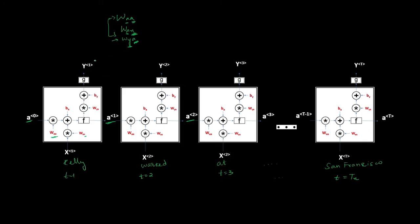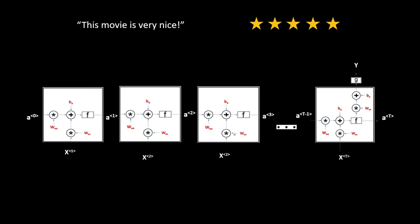For some applications like many-to-one, we do not have an output at every timestamp — only at the final word. For example, in a movie rating system, we pass words at each timestamp, feed activations to the next timestamp, but do not compute any output until we reach the end of the sentence, where a single output is produced.